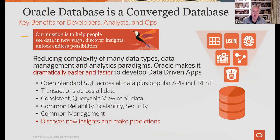The converged database has many benefits: reduced complexity, handling many different data types, and you can do many different things. The one I'm most excited about is discovering new insights and making predictions. Why would you save all this data in the first place if you weren't trying to see the data in new ways, discover insights, and unlock endless possibilities? That speaks to machine learning.